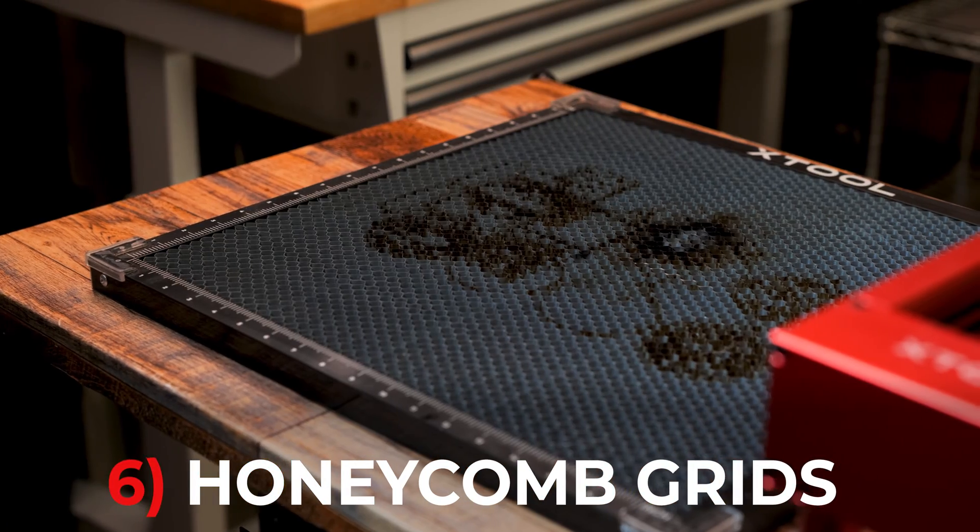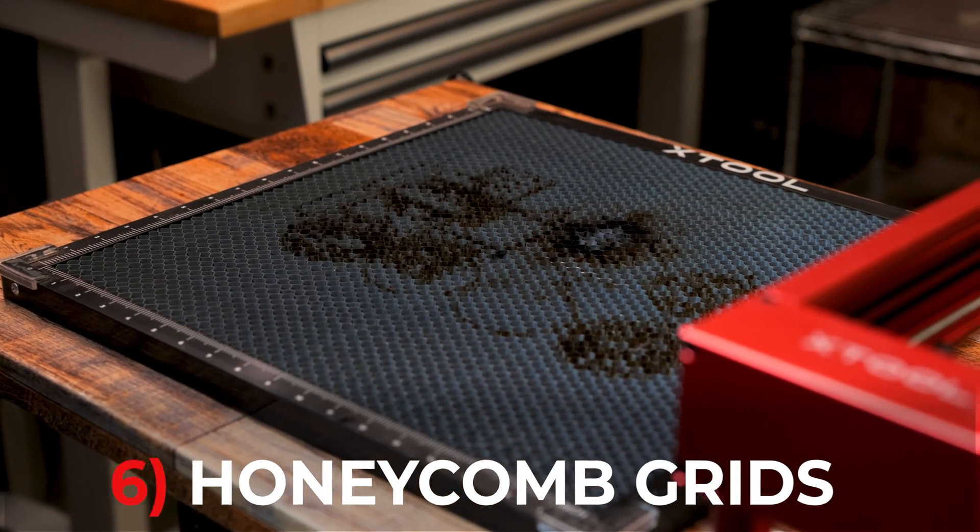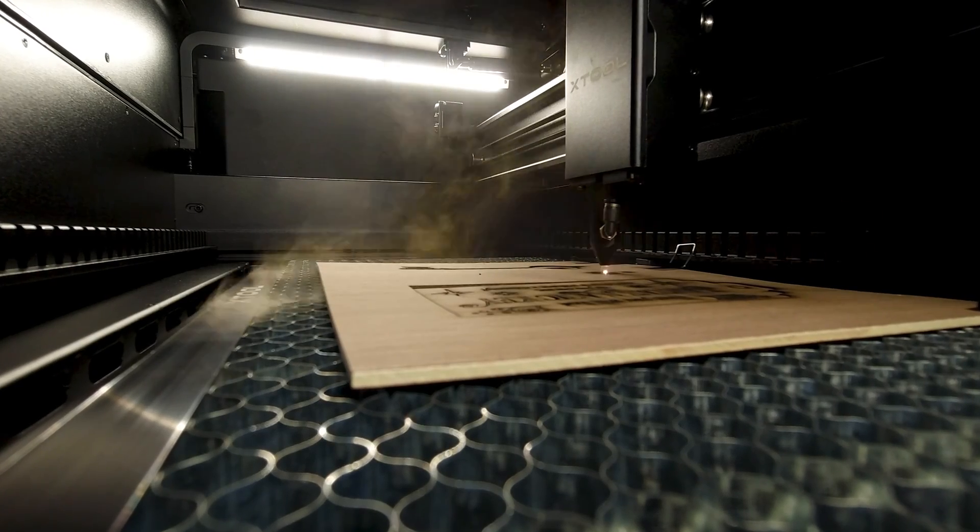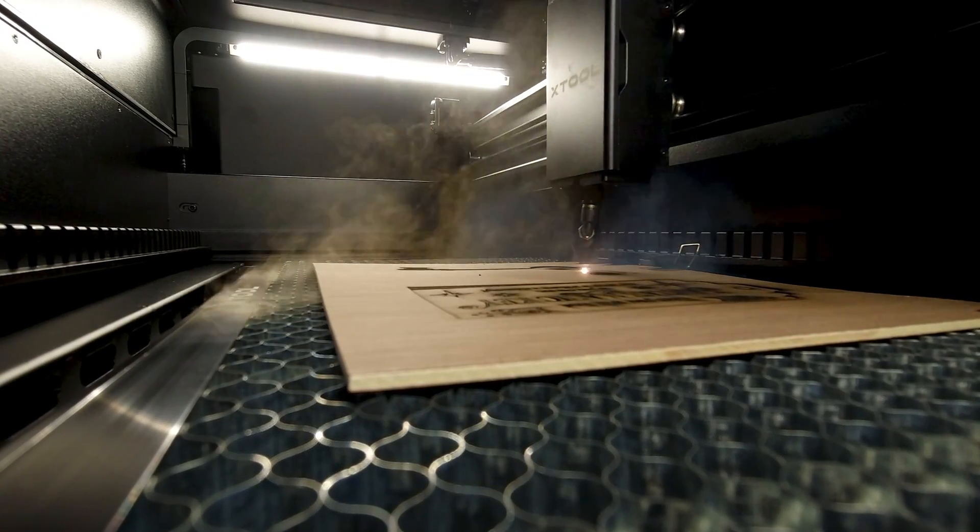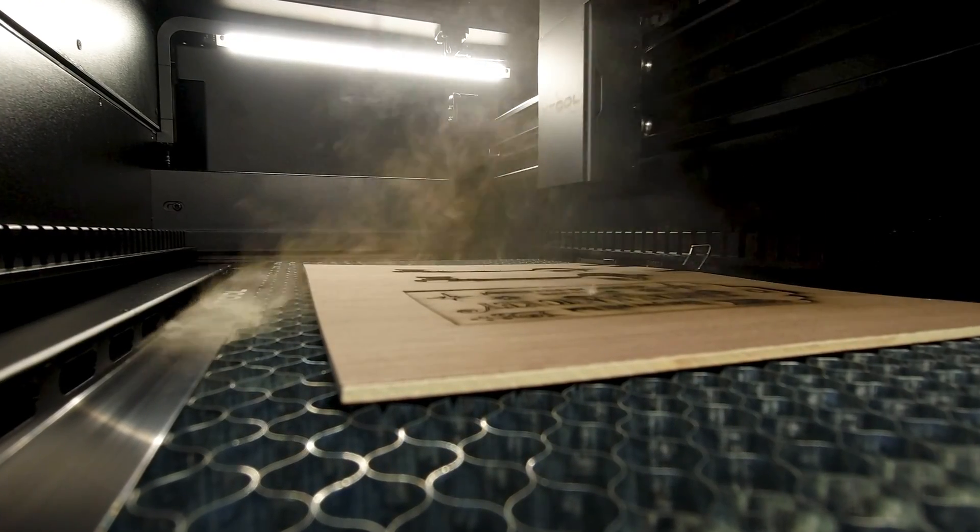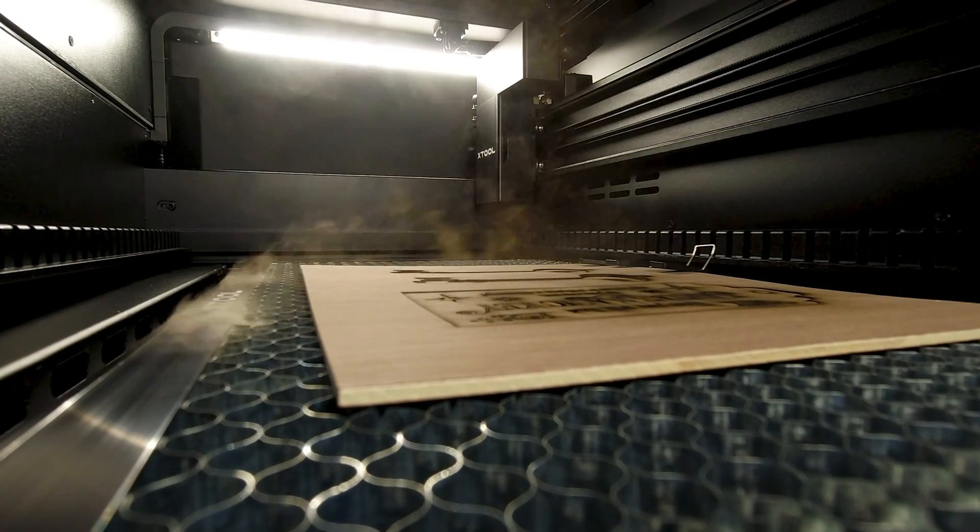And number six: honeycomb grids. This honeycomb pattern of the grid allows for efficient airflow beneath the material while cutting. This also helps to remove smoke, fumes, and debris during the laser cutting process. This may not sound too impressive since I'm running through this fast, but I promise you you need one of these if you are going to be doing any type of cutting with your laser engraver.